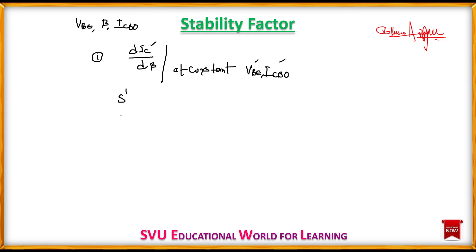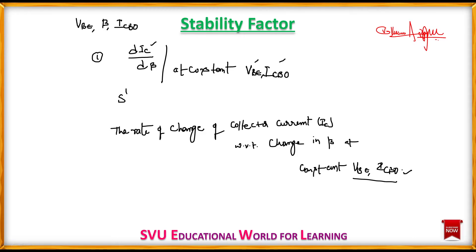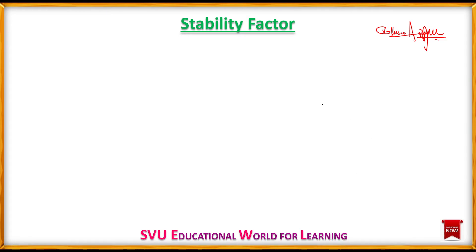S-dash is indicated by S'. The rate of change of collector current with respect to change in beta, at constant VBE and ICBO. This is the second stability factor, S', which measures how collector current responds to variation in the current amplification factor beta.